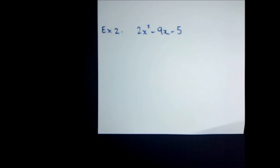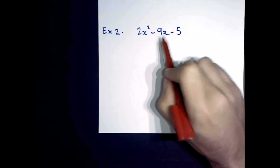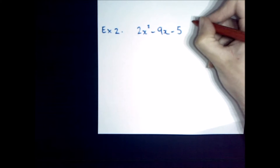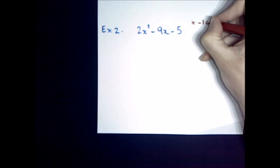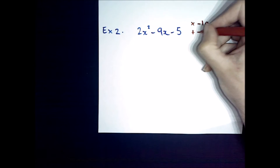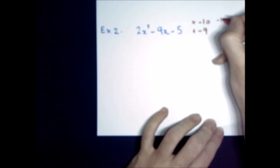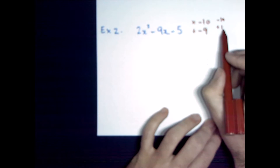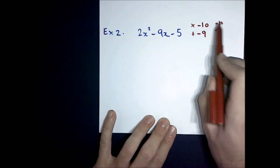For this one we've got some negative numbers. But first thing I want to do is check and see if I can factorise out this 2. I can't divide all of my numbers by 2, so I'm going to have to do the deconstruction method. I need to find some numbers that multiply to get 2 times negative 5 — so multiply to get negative 10. And they have to add to get the middle number which is negative 9. So my two numbers are negative 10 and positive 1. Negative 10 plus 1 is negative 9, and negative 10 times 1 is negative 10.